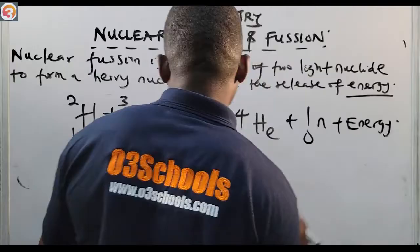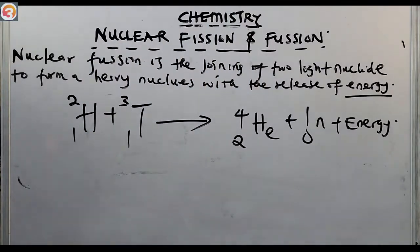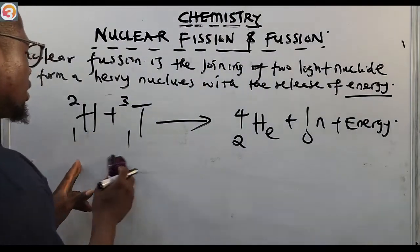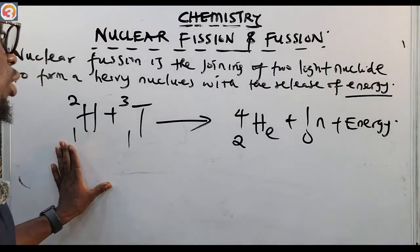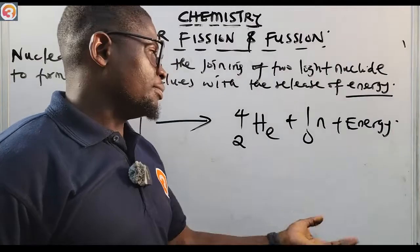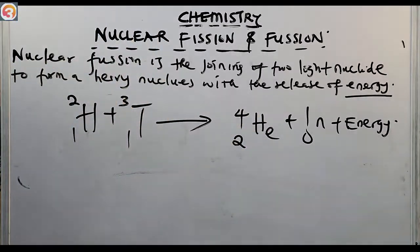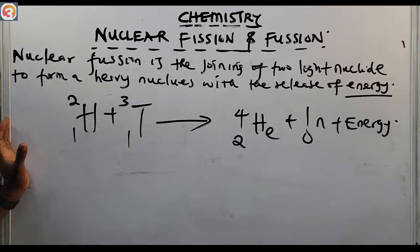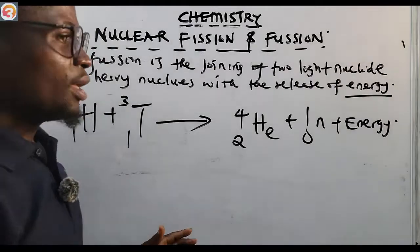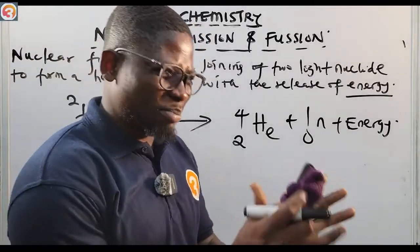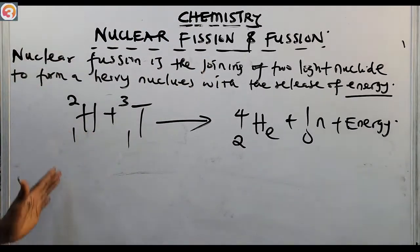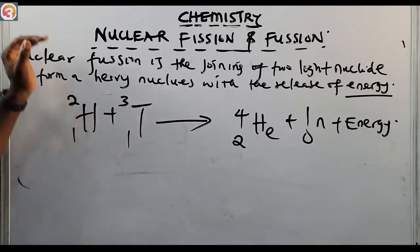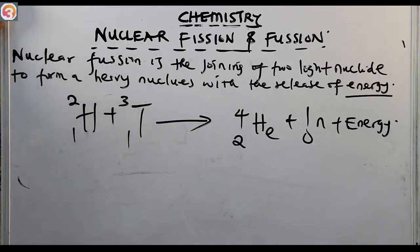This is an example of nuclear fusion — the coming together of two isotopes of hydrogen to give us a helium nucleus plus a neutron and the release of energy. In nuclear fission we saw splitting, but in nuclear fusion we see joining — the bringing together of two light nuclei to give a heavy nucleus with the release of energy.